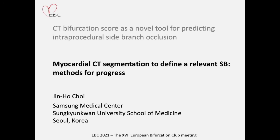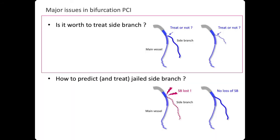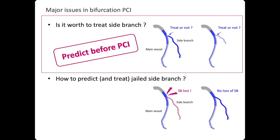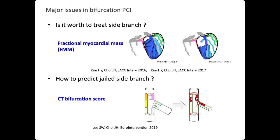Dear Chairman, thank you for the invitation to present at the EBC 2021 meeting. I have nothing to disclose. There may be two major issues in bifurcation PCI. The first is: is it worth to treat the side branch? The second topic is how to predict and treat a jailed side branch before PCI, not during or after ballooning. The amount of myocardium subtended by the vessel and the CT-BIPCAN score may answer each question.